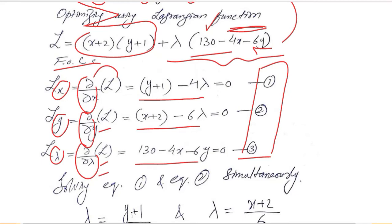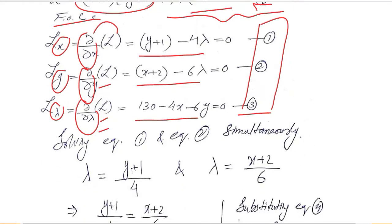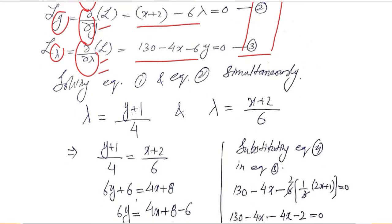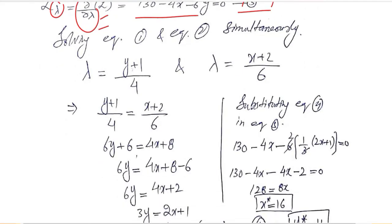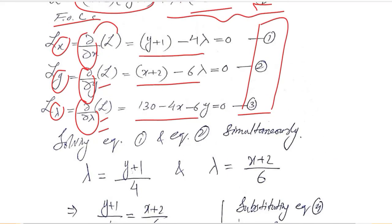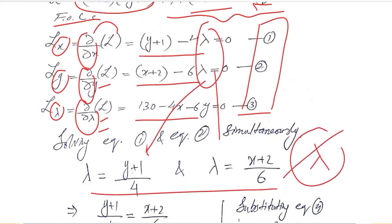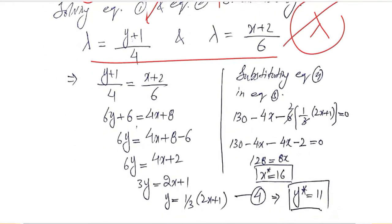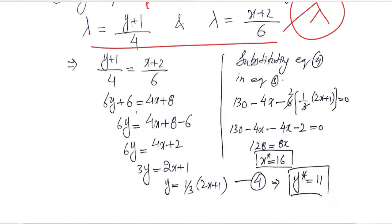This is the triad of the first order conditions that we can now solve simultaneously because there are three unknowns and three equations: x, y and lambda respectively. We start with the first two equations where we have lambda and we can extract their values and then equate them in order to get rid of the lambda.